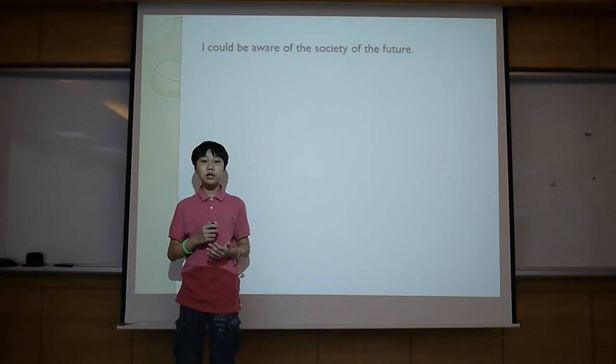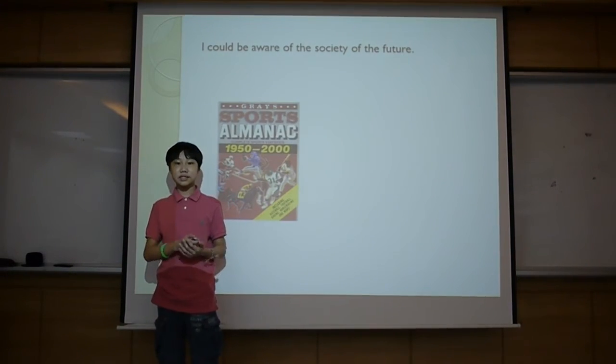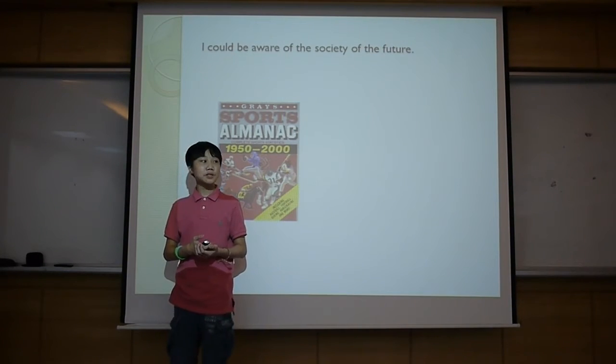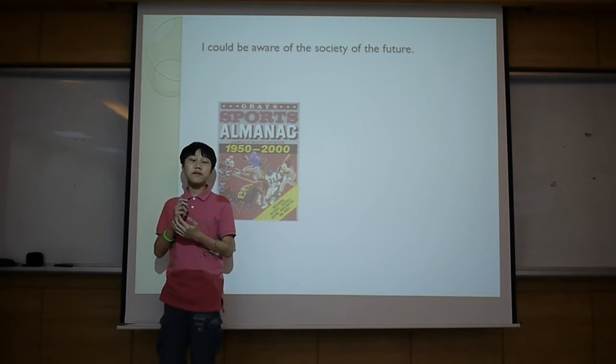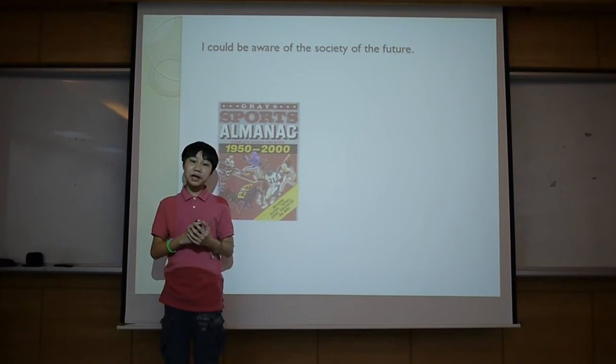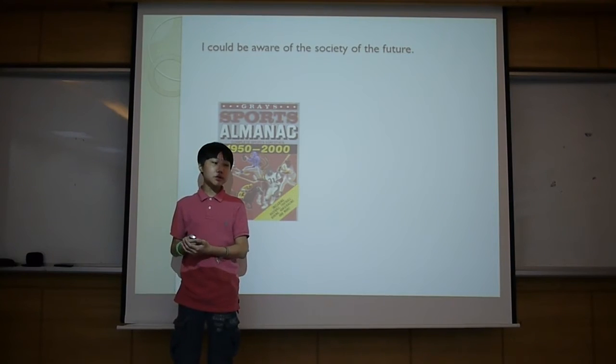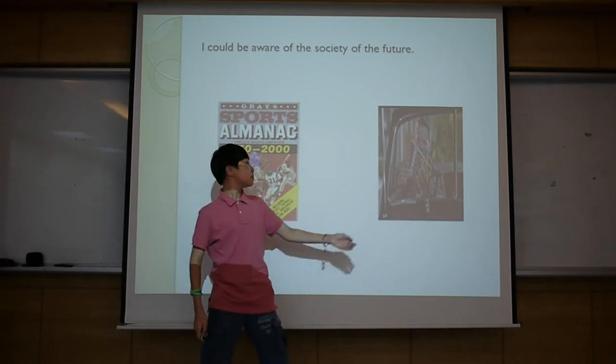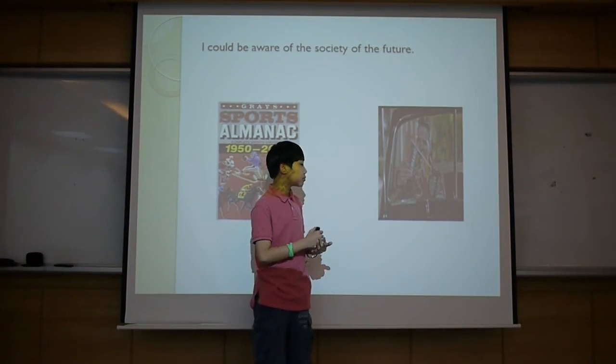As an example, in Back to the Future, a character named Biff met himself from the past. He got to know every winning sports result from the 1950s to 2000s because he obtained a magazine called the Sports Almanac. This is the picture where Biff is holding the Sports Almanac magazine.